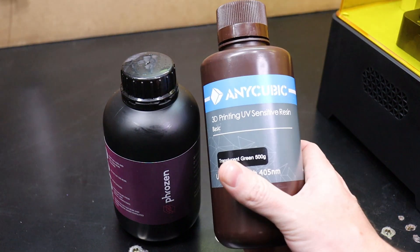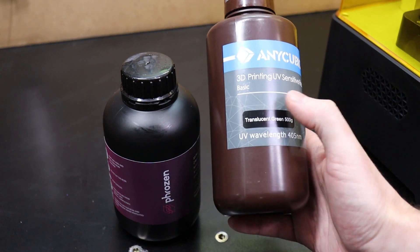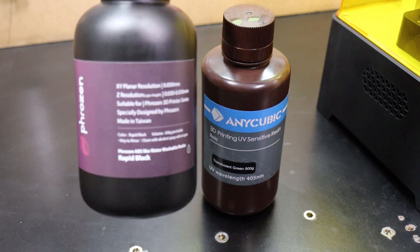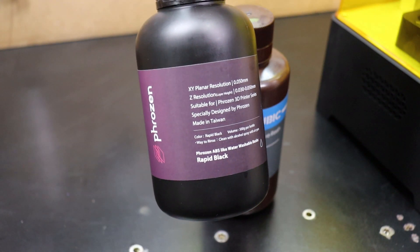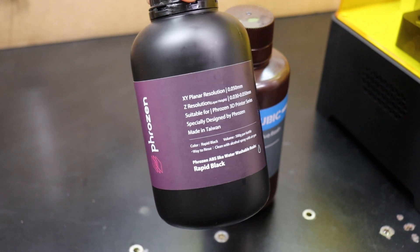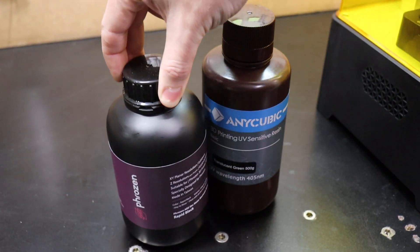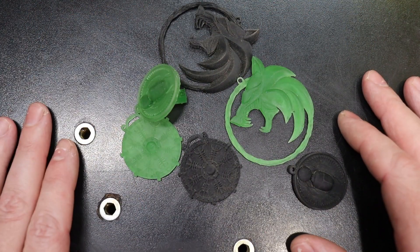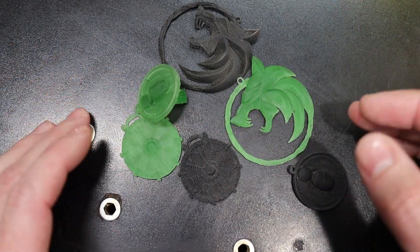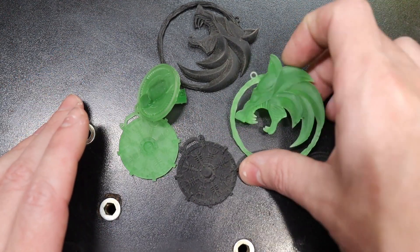I did a couple test prints using the Anycubic translucent green along with some of this which is basically a water washable ABS-like black resin. No surprise, everything printed without any problems using the default settings on the software that came with the machine.